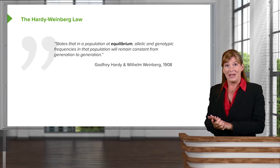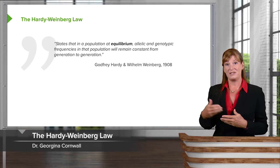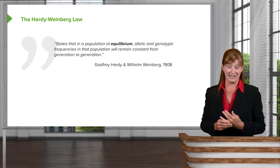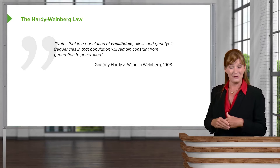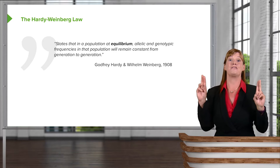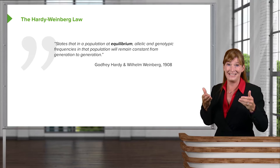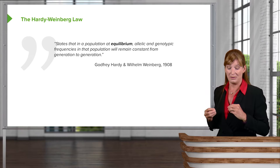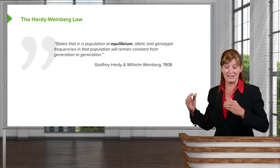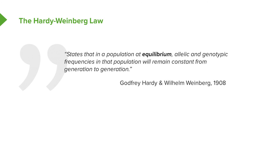So let's take a look at the Hardy-Weinberg law and where this equation came from and why, because it can be a little bit confusing to understand why we have some statement like this. Hardy-Weinberg law — I need you to understand first that it is a theoretical case. It doesn't really exist in nature. Hardy-Weinberg equilibrium states that a population at equilibrium has allelic and genotypic frequencies that remain constant from generation to generation. As you probably recall, populations change — allelic frequencies change in populations. So why have this crazy statement that's totally theoretical?